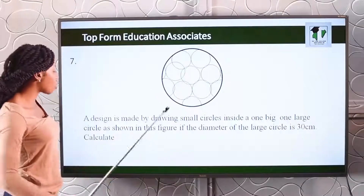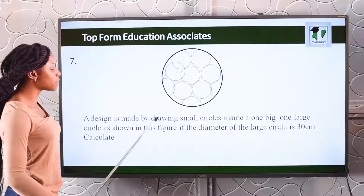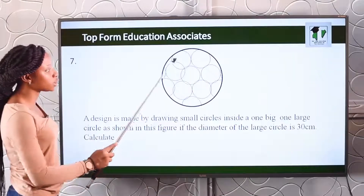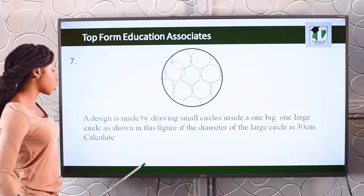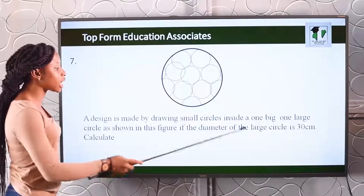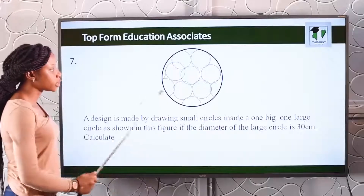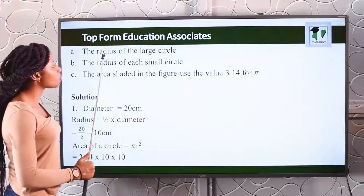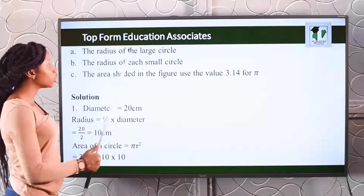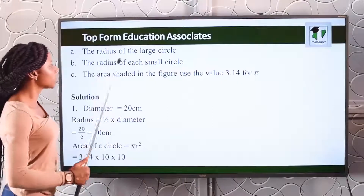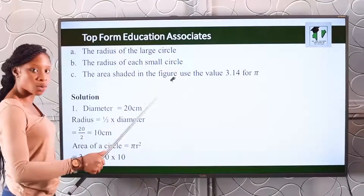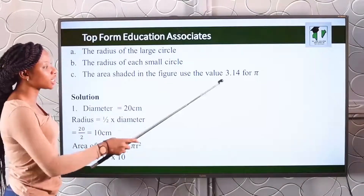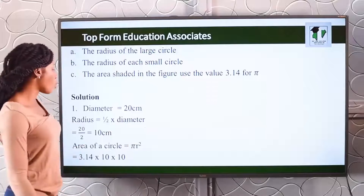Number seven: a design is made by drawing small circles inside one big circle. You can see small circles inside this large circle as shown in the figure. If the diameter of the large circle is 30 centimeters, calculate: A) the radius of the large circle, B) the radius of each of the small circles, C) the area of the shaded part. Take pi as 3.14.